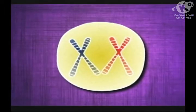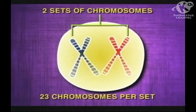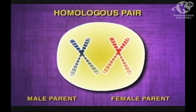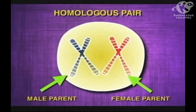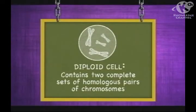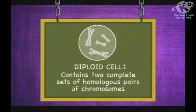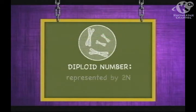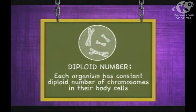In humans, each body or somatic cell contains two sets of chromosomes, with 23 chromosomes in each set. Each of the 23 pairs is called a homologous pair. One comes from each parent cell. A cell that contains two complete sets of homologous pairs of chromosomes is called a diploid cell. The number of chromosomes in a diploid is called the diploid number, represented by 2N. Each organism has a constant diploid number of chromosomes in their body cells.